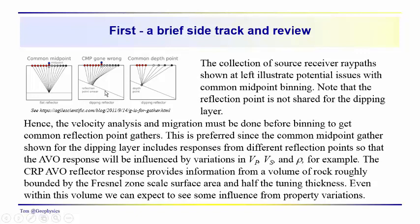If the layer is dipping, we tend to see that as we go from short source-to-receiver offsets, the reflection points walk up dip, up the dip of the reflector. So in your gather, we'll be seeing variations in amplitude that are associated with changes in the physical properties of the interval we're reflecting off of — stratigraphic variations or changes in the properties of the fracture network, spread out across an area.